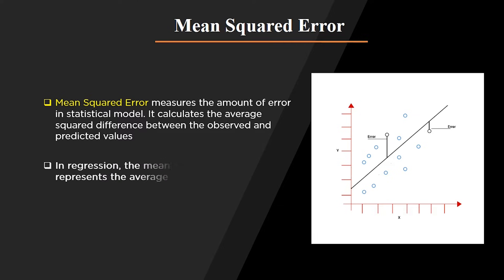Let's start by defining what mean squared error is. Mean squared error measures the amount of error in a statistical model. It calculates the average squared difference between the observed and predicted values. In a regression line, the mean squared error represents the average squared residual. As you can see in the graph, as the data points fall closer to the regression line, the model has less error, decreasing the mean squared error. A model with less error produces more precise predictions.